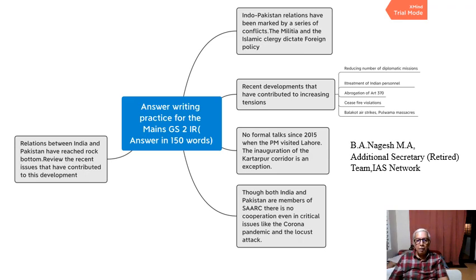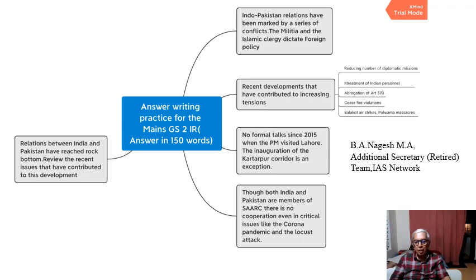Coming to the main part of the question: the question asks to review the recent issues that have contributed to relations between India and Pakistan reaching rock bottom. The examiner wants to know what issues have come in the way of good neighbourly relations. The first point is the reducing and scaling down of diplomatic missions because of tensions in the relationship — when diplomatic missions are scaled down, the relationship is in a state of flux or tension.